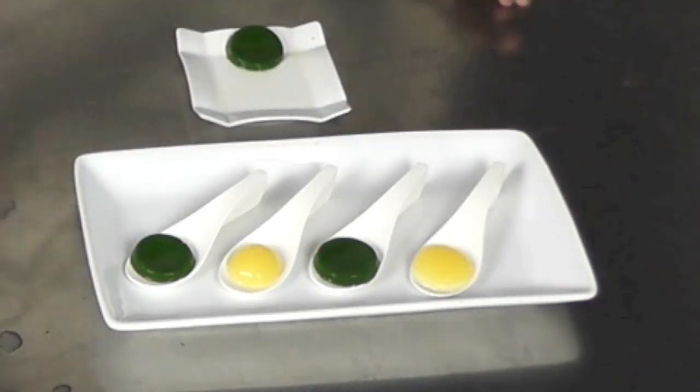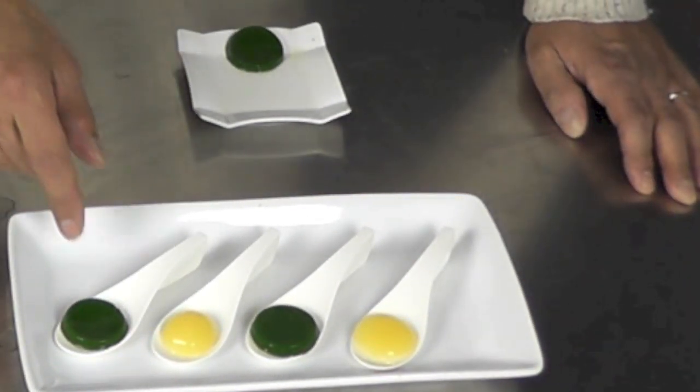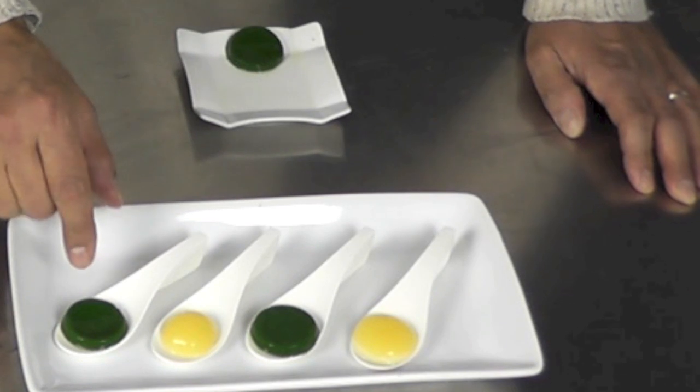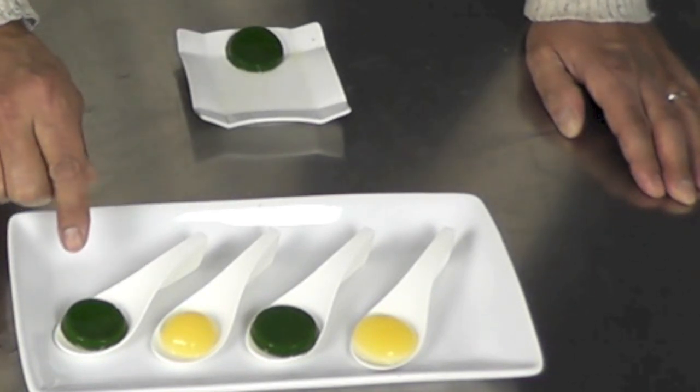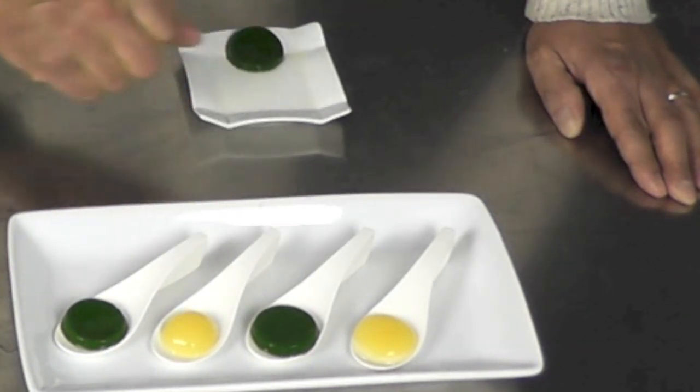And here we have those beautiful ravioli. This one is a solid ravioli made out of spinach, it's on one of my previous videos, and this one is the orange. So let's see how they come out.